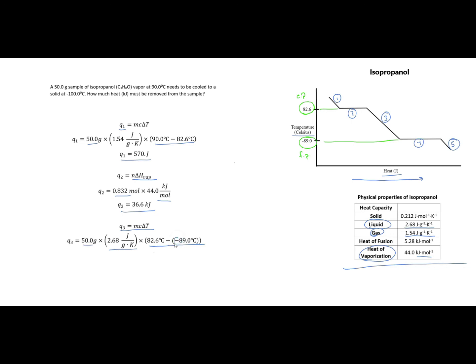Just be careful here, especially if you're using Celsius, that is a negative 89 so you want to make sure you get that negative in there. Quick plug and chug and Q3 is 2.30 times 10 to the fourth joules.